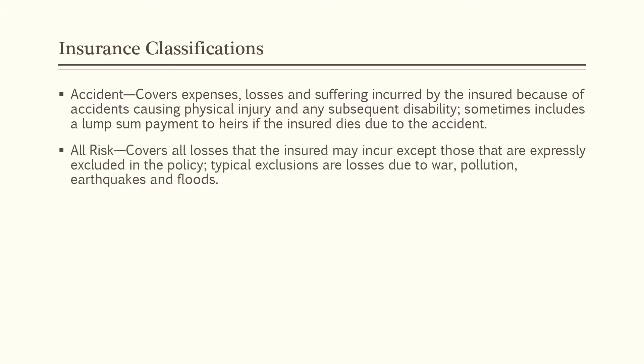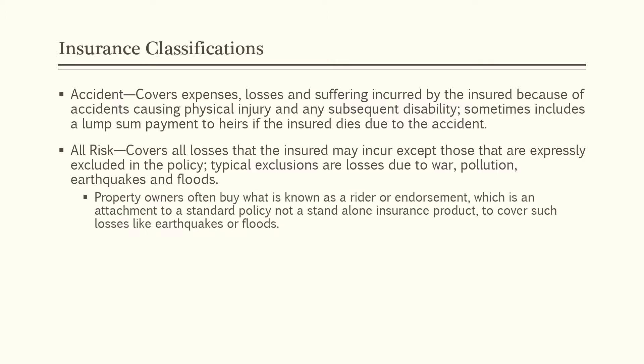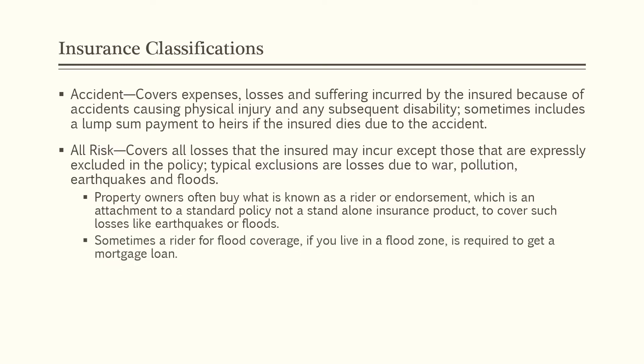Then there's all-risk insurance. It covers all losses that the insured may incur except those that are expressly excluded in the policy. Typical exclusions are losses due to war, pollution, earthquakes, and floods. Property owners often buy what is known as a rider or endorsement, which is an attachment to a standard policy and is not a standalone insurance product. It covers such losses like earthquakes or floods. Sometimes a rider for flood coverage, if you live in a flood zone, is required to get a mortgage loan.